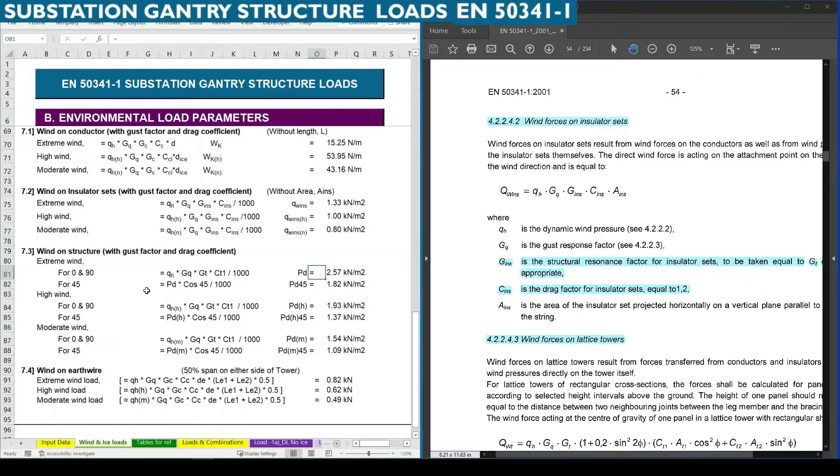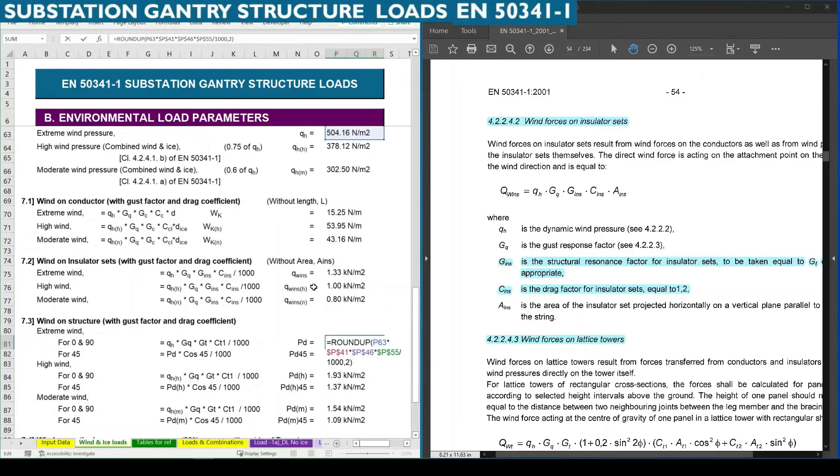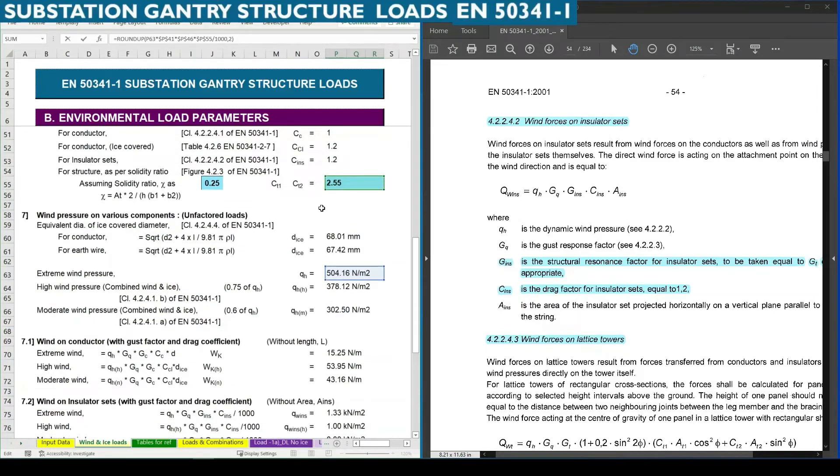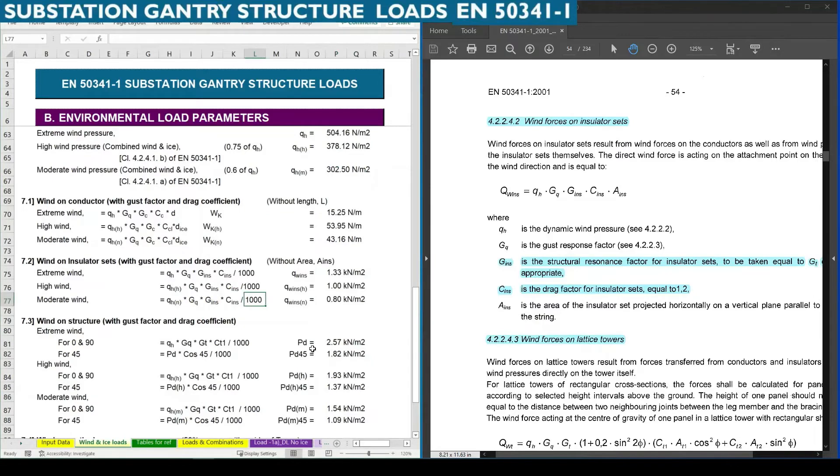Similar for wind on structure. Generally in European standard they calculate wind forces on structure in three directions. One is zero which is parallel to conductor, another is 90 which is perpendicular to conductor span, and another is 45 which is diagonal to conductor span. We are going to calculate the same way in three directions. Zero and ninety degree are the same, only the direction is going to change, magnitudes are same. So we are applying the drag coefficient which we already found as 2.55 using assumed solidity ratio of 0.25. Applying CT1 and GT into QH, we are getting the values for the formula.